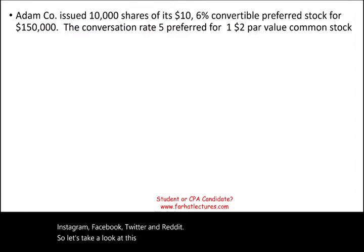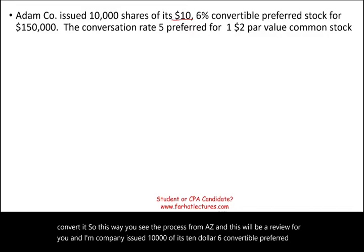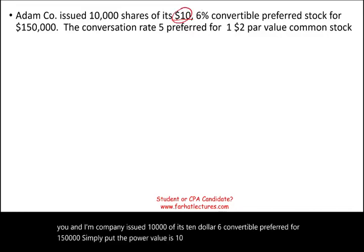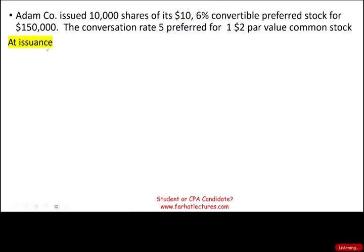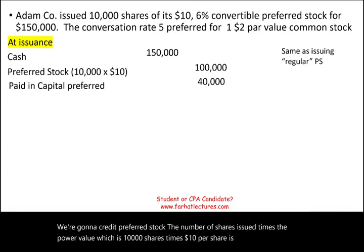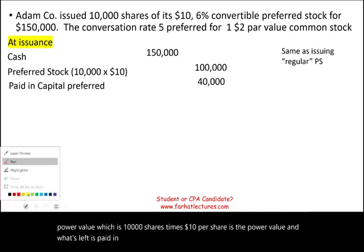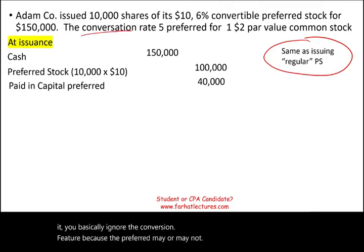Let's look at an example. I'm going to issue the stock first, then convert it, so you see the process from A to Z. Adam Company issued $10,000 of its $10 par, 6% convertible preferred for $150,000. The par value is $10,000, the preferred pays 6%, and we raised $150,000. The conversion rate is: for every five preferred shares, you get one common share with a $2 par value. For the issuance entry, we debit cash $150,000, credit preferred stock $10,000 (10,000 shares × $10 par), and credit paid-in capital preferred $140,000. When you issue it, you ignore the conversion feature because the preferred may or may not convert.